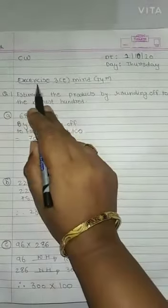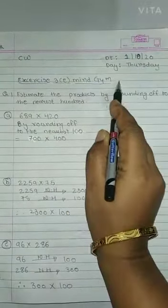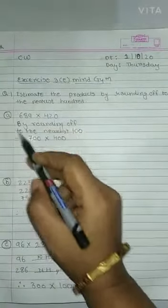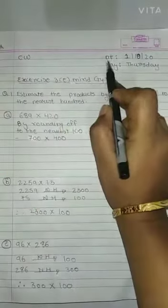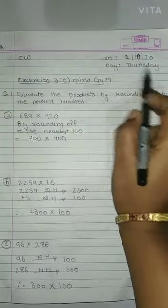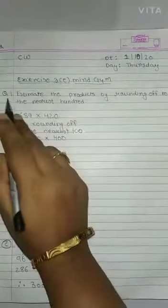In today's maths class, we learn exercise 3E Mind Gym, question number 1, 2 and 3. So students, note down C.W., note down date and day also. Then question number 1.